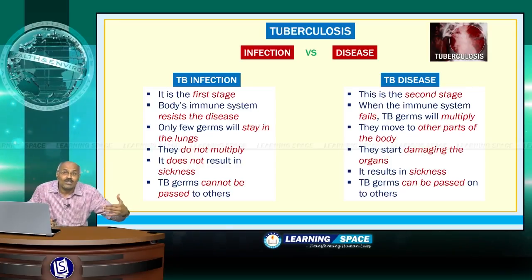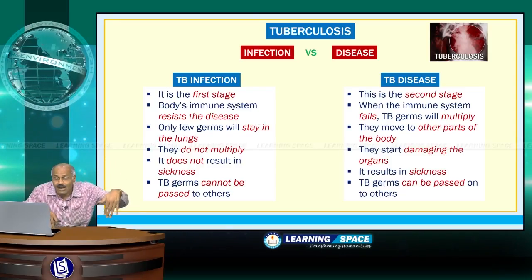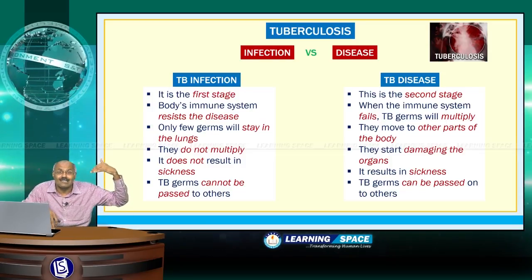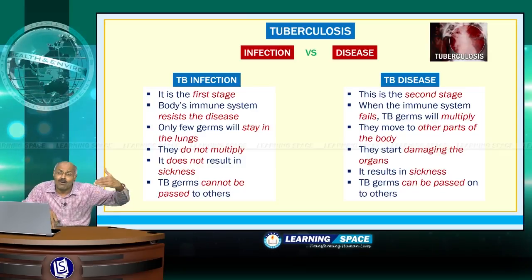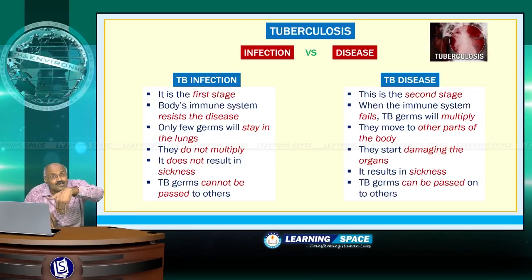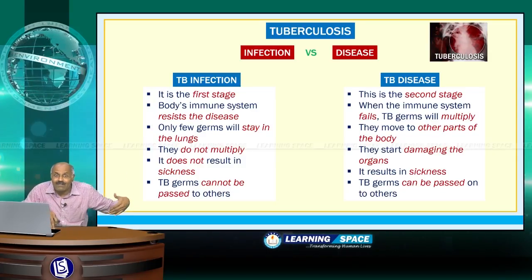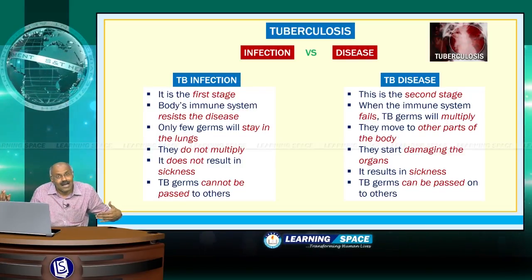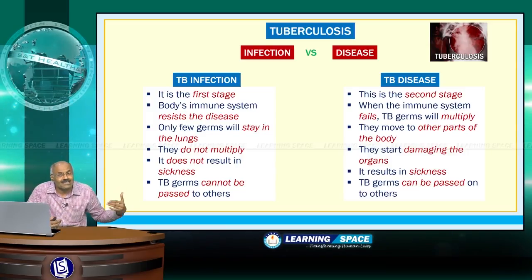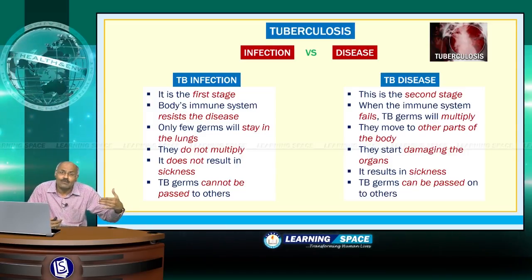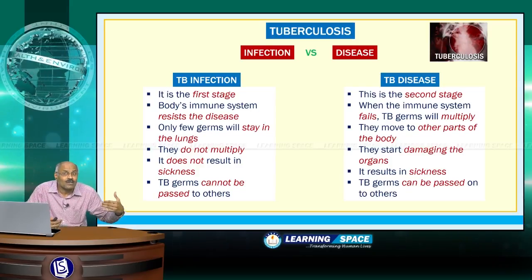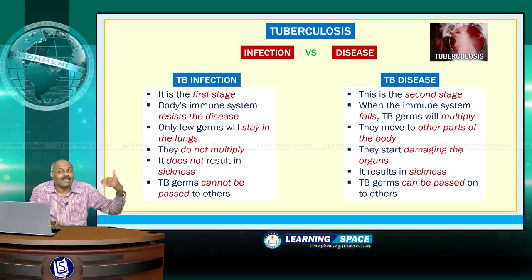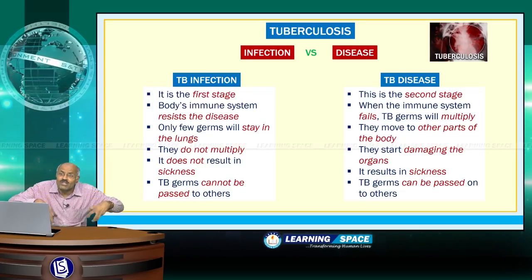Only a few germs stay in the lungs during the infection stage; they do not multiply and do not result in sickness, and TB germs cannot be passed on to others. So TB infection need not necessarily lead to TB disease. TB infection is not that dangerous, and some people may live throughout life without the infection resulting in disease.